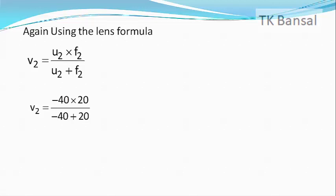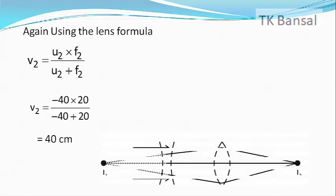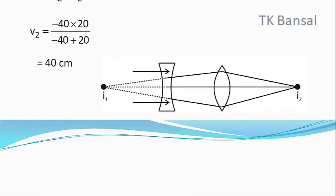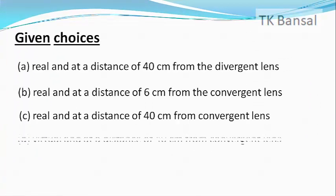Which on simplification gives V2 equals plus 40 cm. Therefore a real image will be formed at a distance of 40 cm behind the converging lens, and hence choice C is the correct answer.